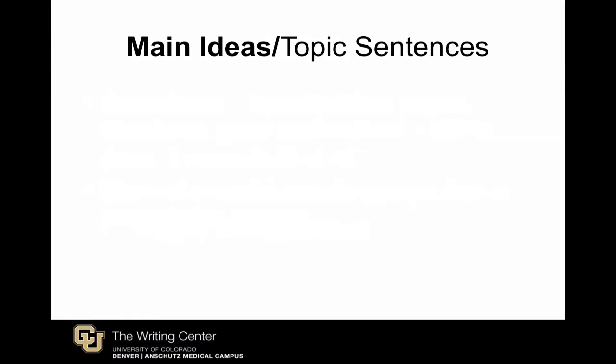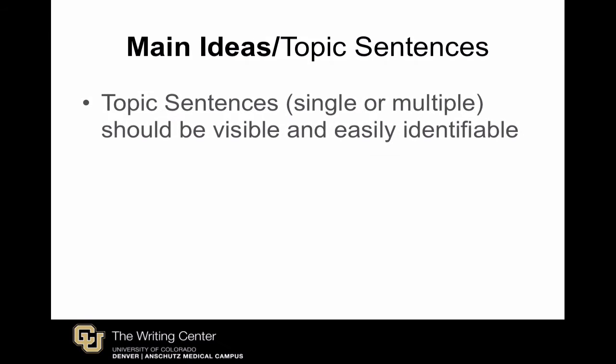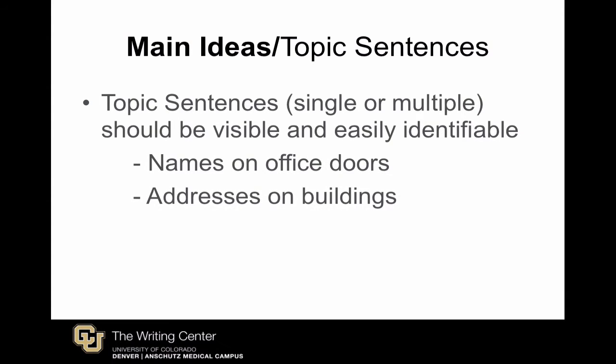Let's quickly dig into the individual elements as a means of demonstrating MEAL's usefulness. First up is main ideas or topic sentences, which need to be visible and easily identifiable. Like names on office doors, addresses on buildings, or signs on businesses, topic sentences should accurately convey what's inside the paragraph.